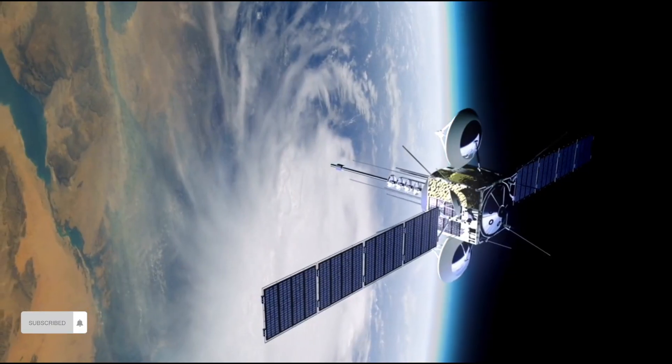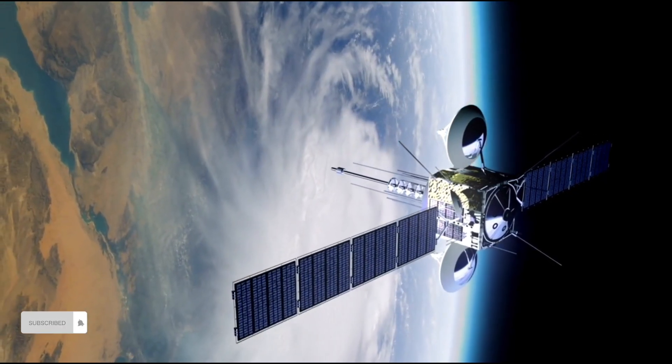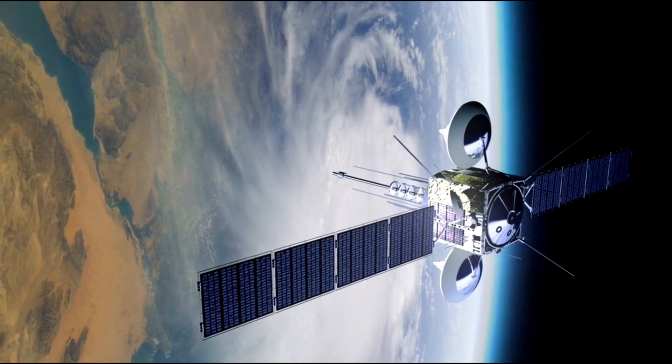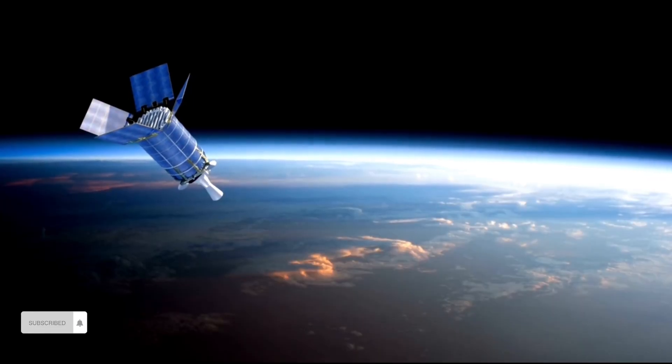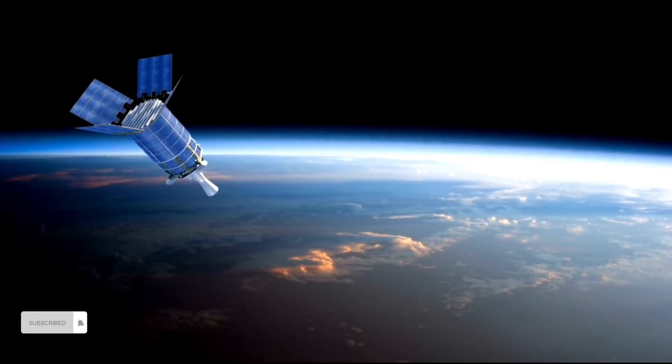Some of these exoplanets are located in what scientists call the habitable zone, meaning they are at the right distance from their stars to potentially support liquid water and possibly life.